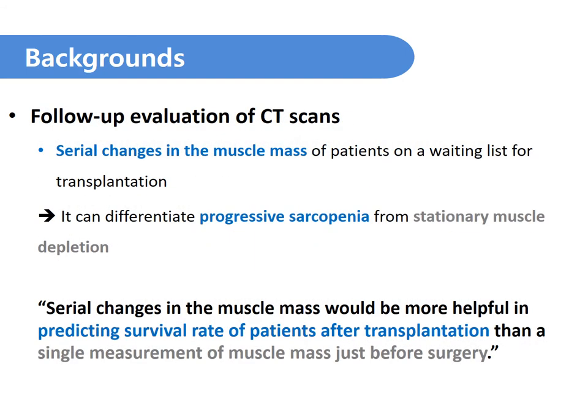Follow-up evaluation of CT scans can provide information on serial changes in nutritional or muscle wasting status, and it can differentiate progressive sarcopenia from stationary muscle depletion. Thus, we hypothesize that serial changes in muscle mass of patients on a waiting list for transplantation would be more effective than a single measurement of muscle mass just prior to surgery in predicting the survival rate of patients after transplantation.